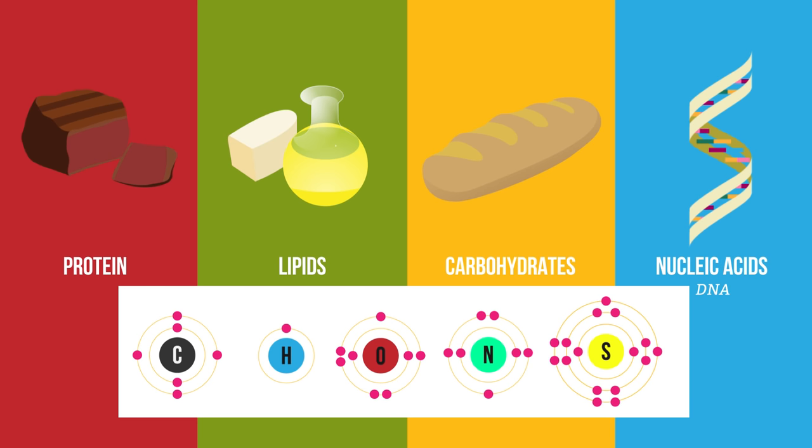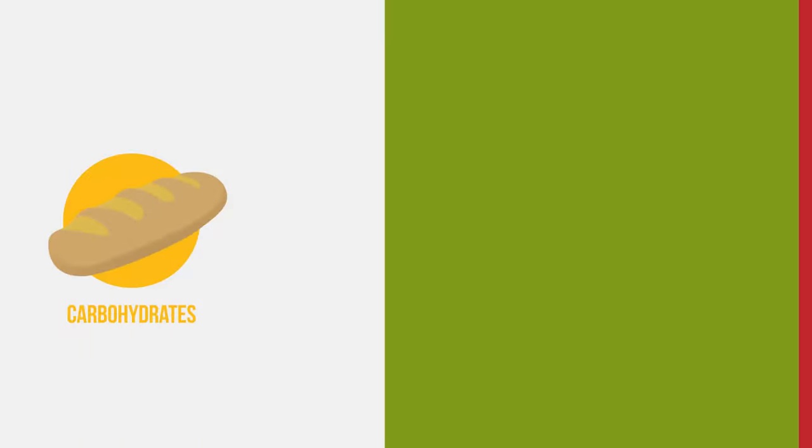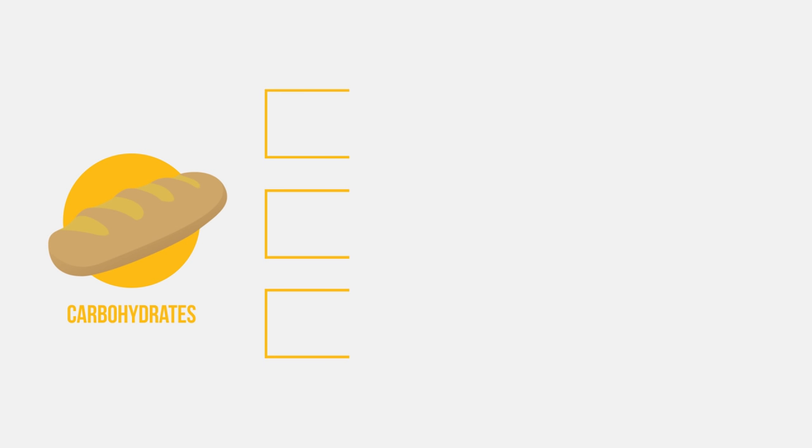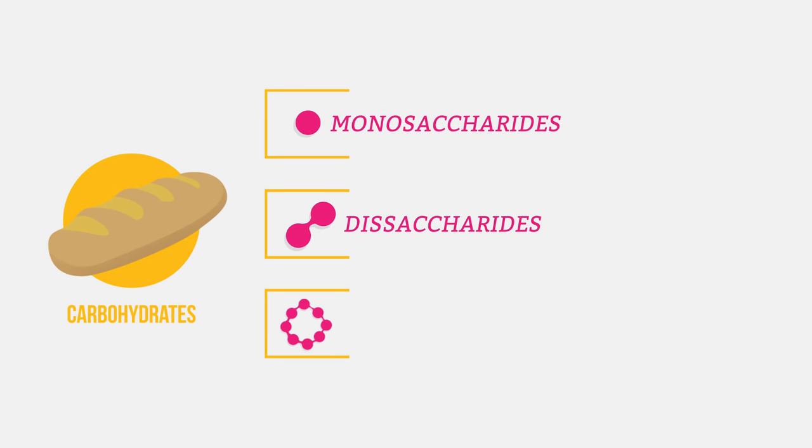Let's start by looking at carbohydrates. There are three main types of carbohydrate: monosaccharides, disaccharides and polysaccharides.